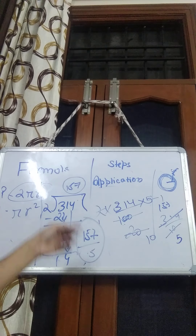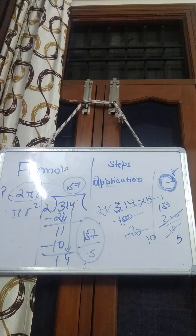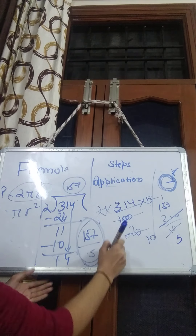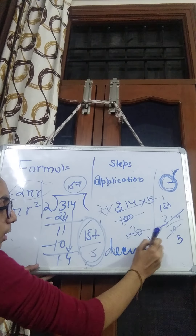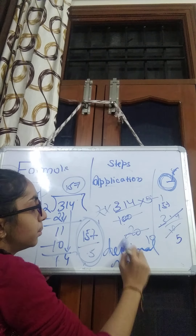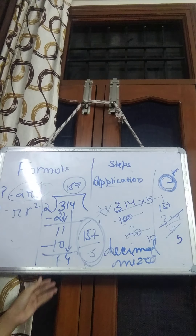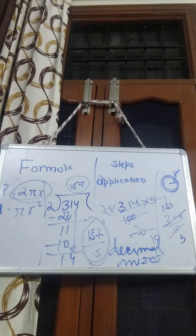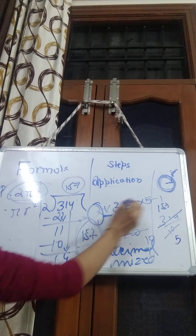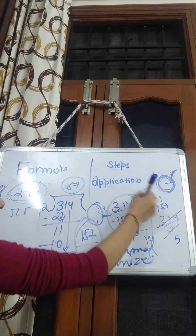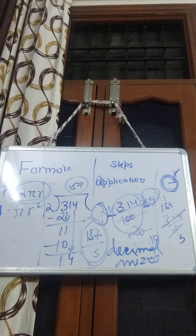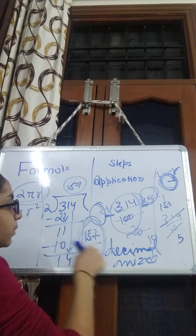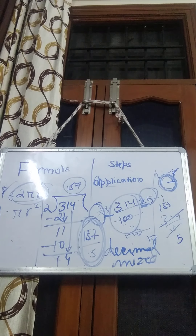So our circumference is 157/5. This is our final answer — the circumference of this circle. The answer may come in fraction form; you can convert it to decimal or mixed fraction form. This is how we find the circumference using the formula 2πr: multiply 2 by pi, then by the radius of 5, giving 157/5.